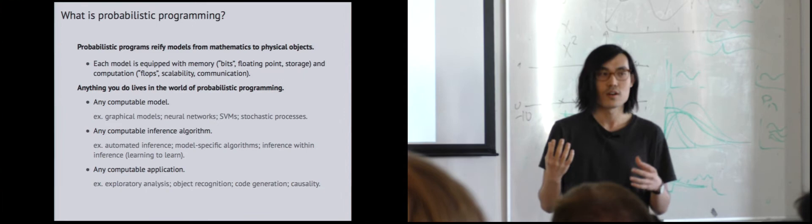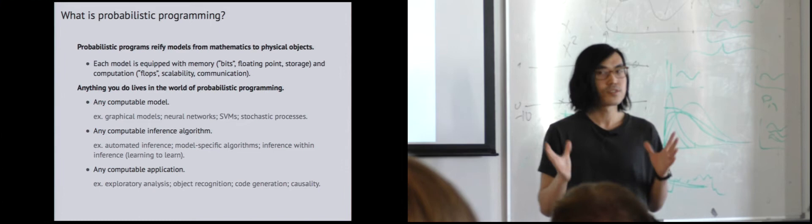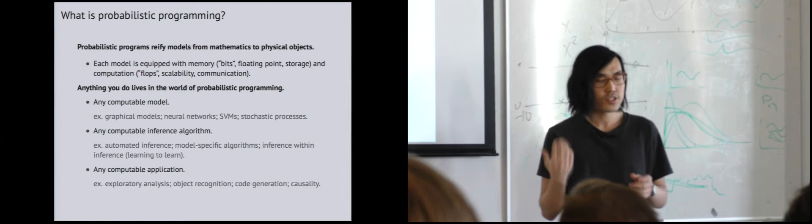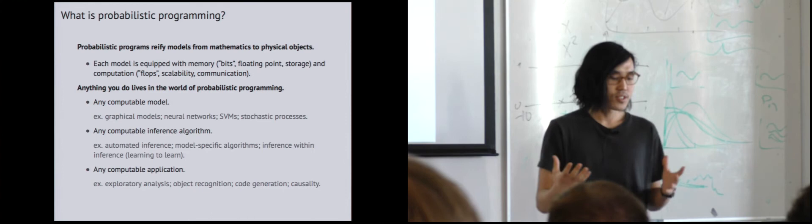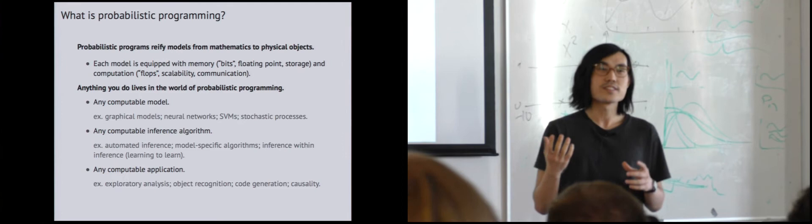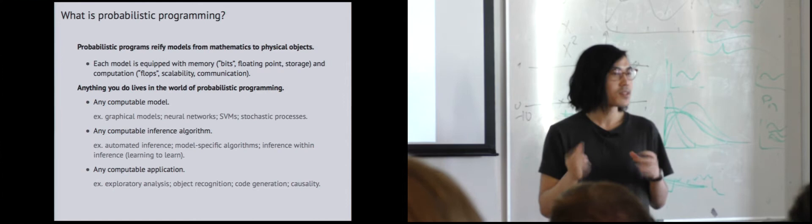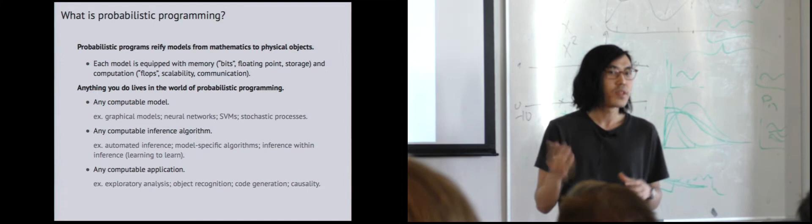In any application you would imagine — exploratory analysis, object recognition in computer vision, code generation, causality — these are all problems of programming. There is this hypothesis in AI that the world is a simulation from a computer. One way of viewing that hypothesis is through probabilistic modeling: basically that there is some probabilistic program in the world that has generated reality. If you wanted to do probabilistic modeling in the Bayesian sense, there is some true probability model, and we're uncovering this through positing some family of distributions and inferring the closest member to the true distribution.